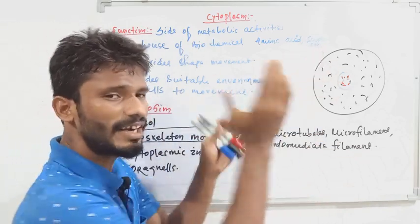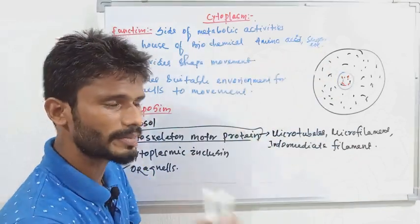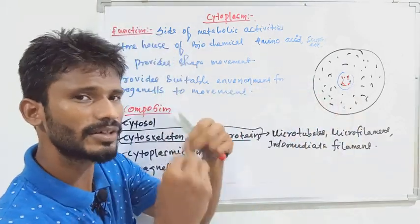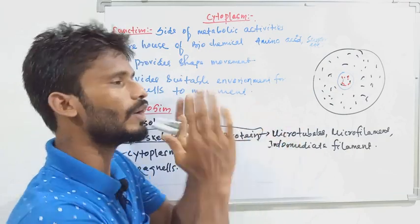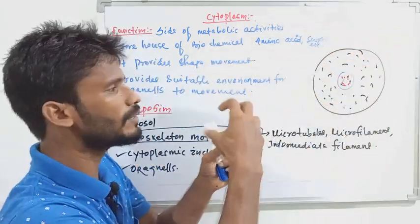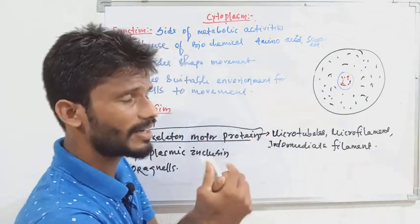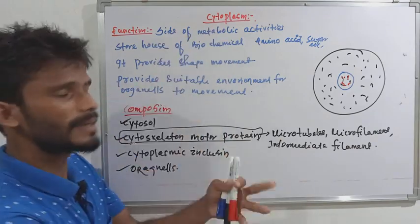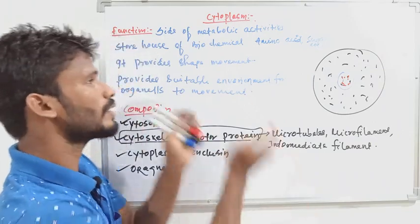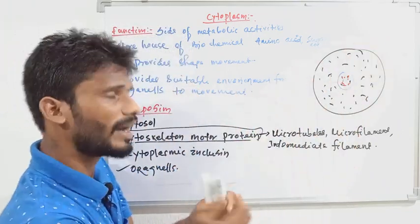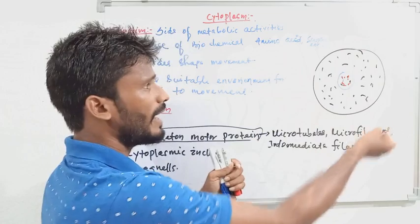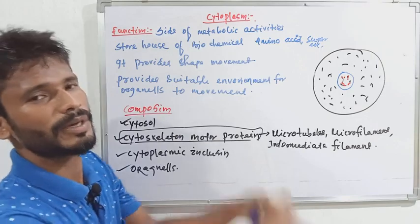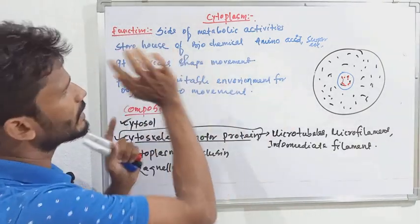The cytoplasmic functions are the same as the protoplasmic functions. The only difference is that protoplasm additionally includes the nucleus, its membrane, and its fluid. The cytoskeleton provides shape and size to the cell, and the fluid allows movement of organelles.